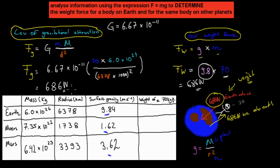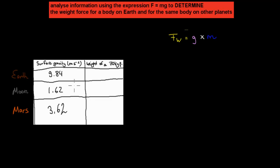What we're going to do in this video is we're going to determine the weight, so what kind of weight we have on these different types of planets. The dot point says analyze information using expressions force equals mass times gravity to determine the weight force for a body on Earth, and for that same body on other planets. So we're going to have to compare us on Earth to us on Moon and us on Mars, and see how our weight changes. All we need is the gravity from that table and our mass of 70 kilograms.